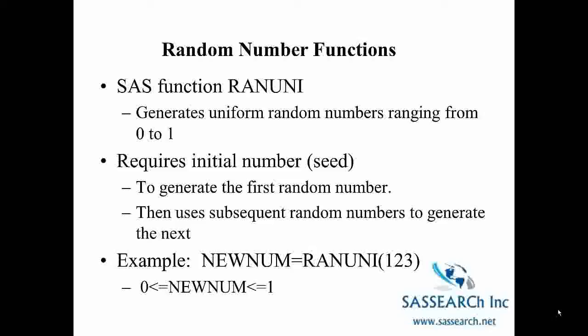The function then uses subsequent random numbers to generate the random numbers after that. So for example, here we have a variable called newNum equals RANUNI of 123. So 123 is our seed and newNum is going to have some numeric value between 0 and 1.